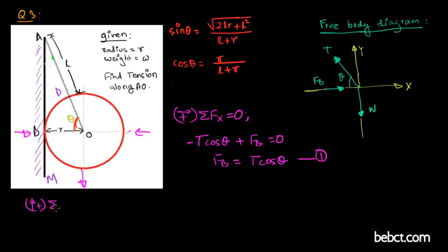And along y-axis, let's consider this direction to be positive. Sum of forces along y-axis should be zero for equilibrium again. So T sine theta is in positive direction and weight is in negative direction.